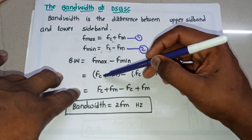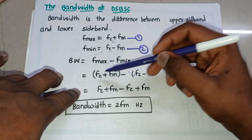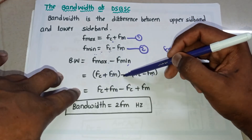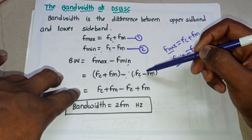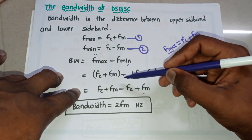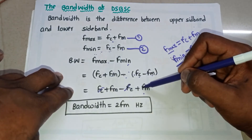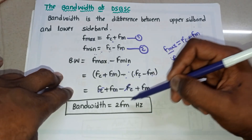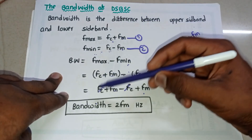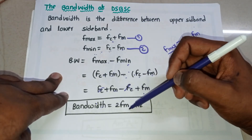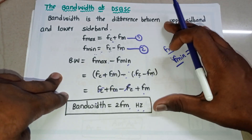We get: (fc + fm) − (fc − fm). Distributing the minus sign: fc + fm − fc + fm. The fc terms cancel, leaving fm + fm = 2fm. Therefore, the bandwidth of the DSBSC wave equals 2fm.